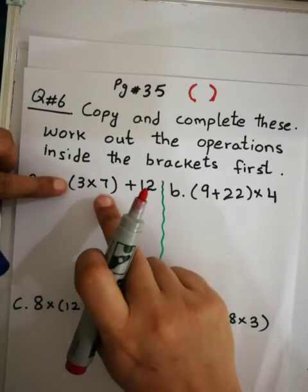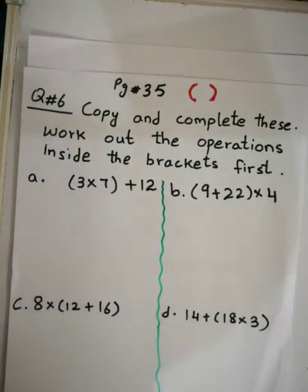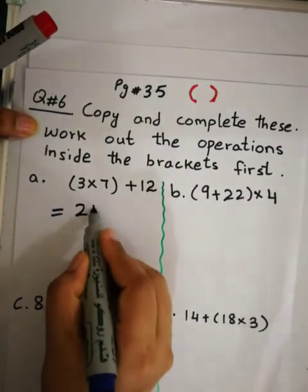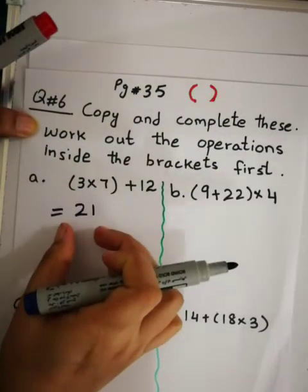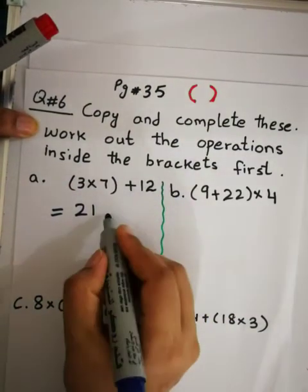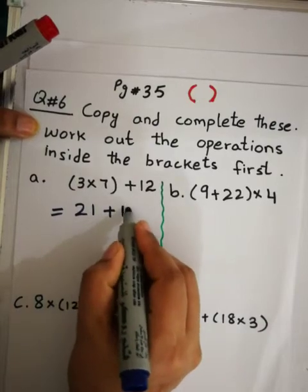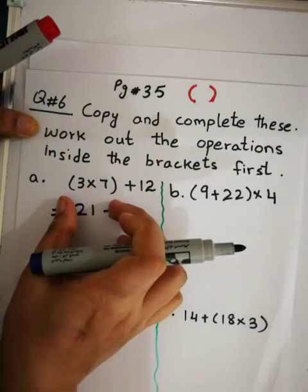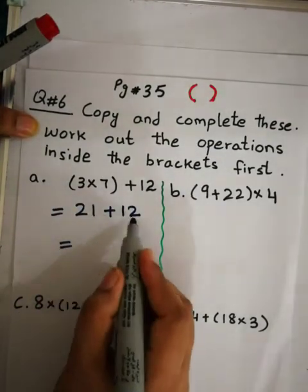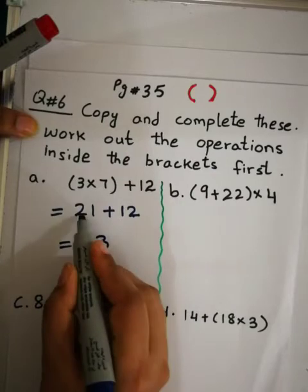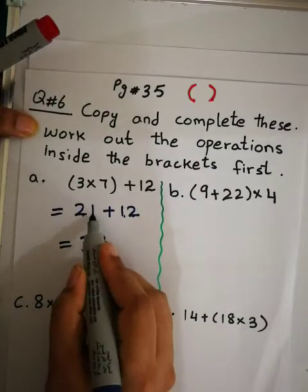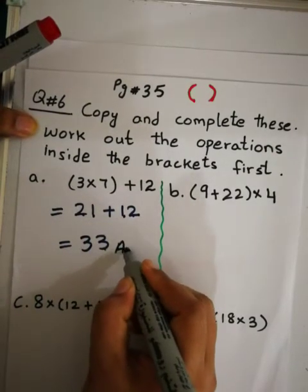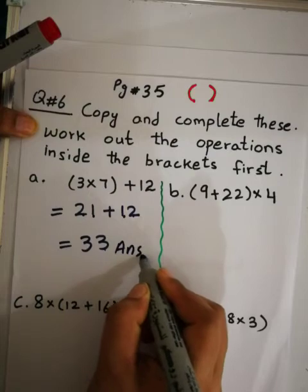So here what is in the bracket is multiply: 3×7 = 21. This plus 12 comes down as it is to the next step. Now we add: 21 + 12 = 33. So 33 is the answer.